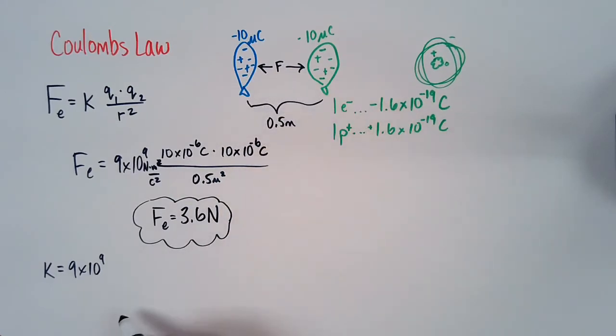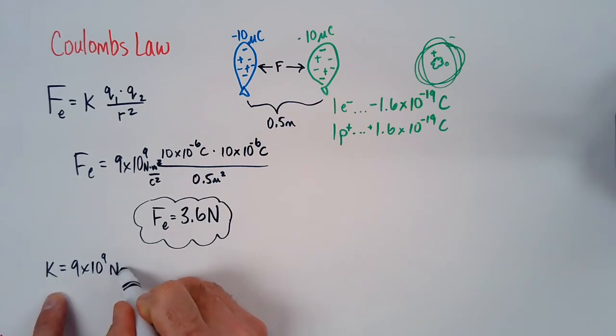If you're taking some notes off of this, coming back here to our constant, our K value, the units are Newtons times meters squared over Coulombs squared.